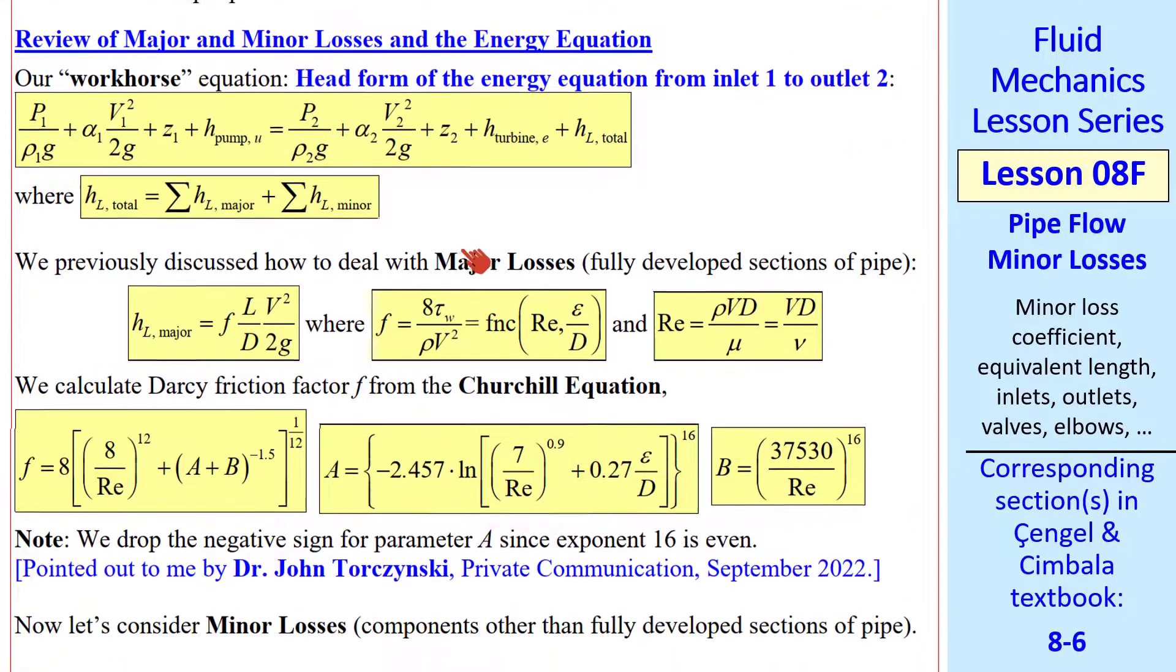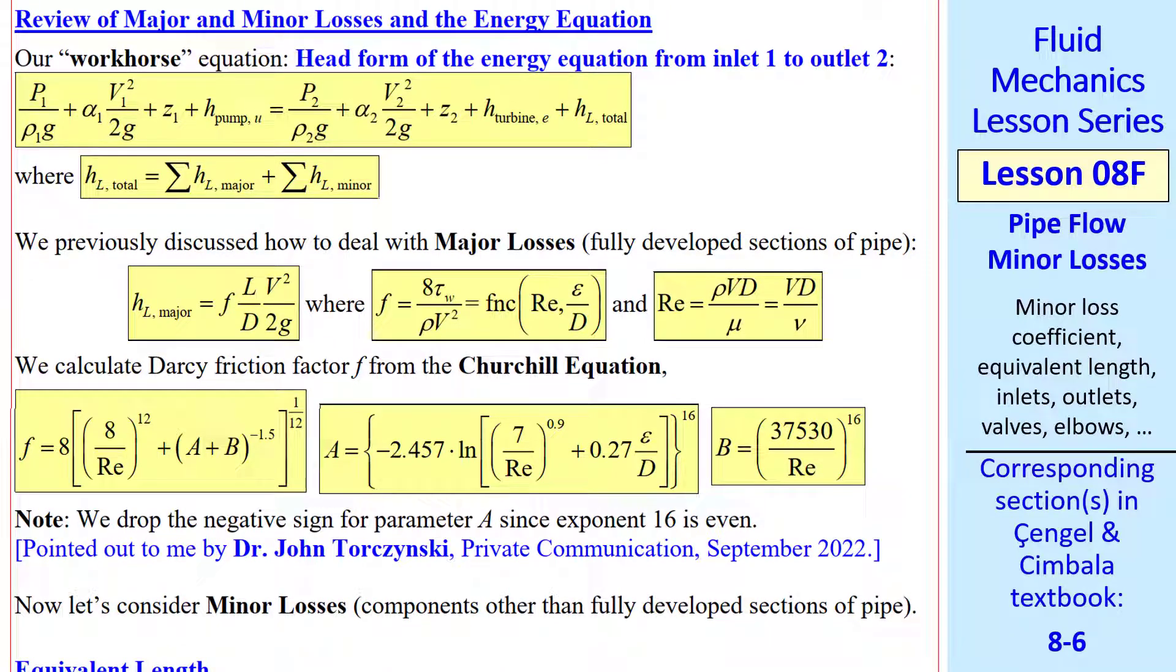First, a review of major and minor losses and the energy equation. What we called our workhorse equation is here, the head form of the energy equation from inlet 1 to outlet 2, where HL total is the sum of all major losses plus the sum of all minor losses.